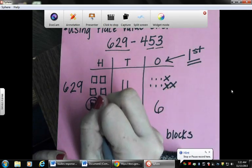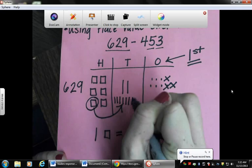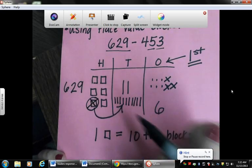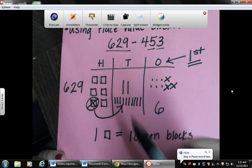Okay, so we're breaking it apart. One, two, three, four, five, six, seven, eight, nine, ten. And then something that can help you is cross out this hundreds block because it's no longer in the hundreds place. We took it apart and we put it in the tens place.